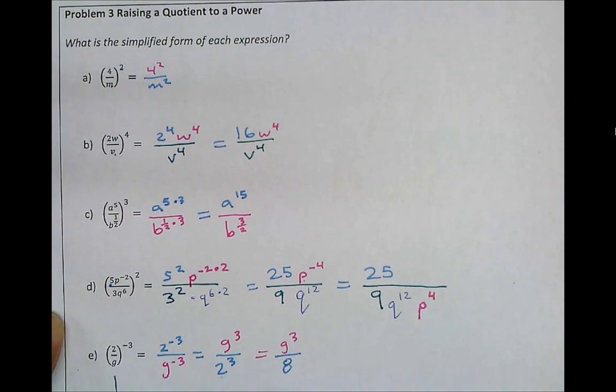As I mentioned, there is a second method. Anytime you have a negative exponent outside of the parentheses and you have a fraction inside, everything inside can be flipped to make the exponent positive. So in other words, we can take this and flip it to g over 2 coming from the 2 over g. And this exponent now becomes a positive 3.